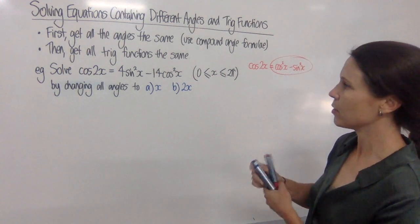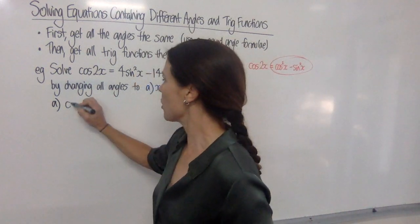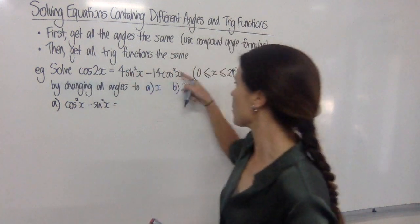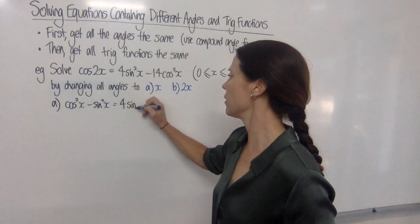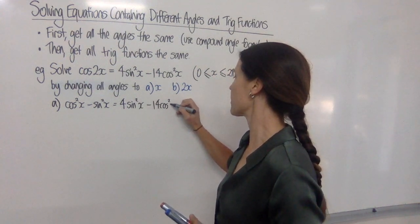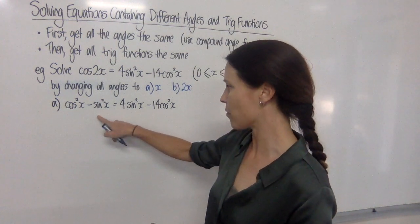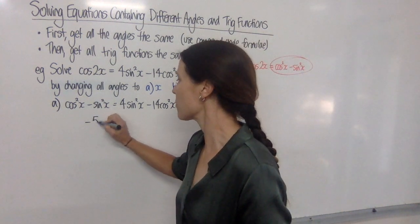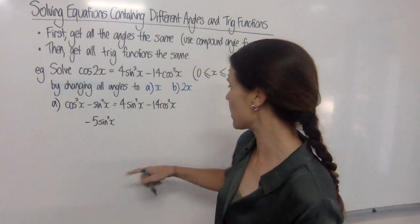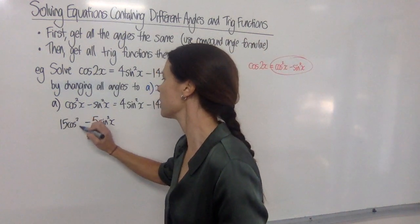Okay, so let's launch into it. Part a, we can see that we've got cos squared x minus sin squared x is equal to 4 sin squared x minus 14 cos squared x. Okay, let's just tidy up. If we subtract 4 sin squared x's from both sides, we'll have minus 5 of them over here. And if we add 14 of those to each side, we'll have 15 of them over here.